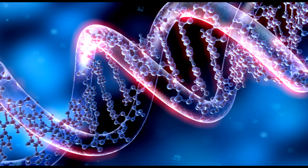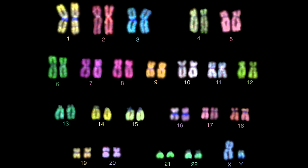Darwin had no concept of genetics or gene inheritance like we do today. We know that we get half of our genetic material — our chromosomes — from both of our parents: 23 pairs of chromosomes for 46 in total, half from our mum and half from our dad. And this is why we have traits from both of our parents.